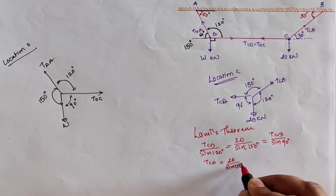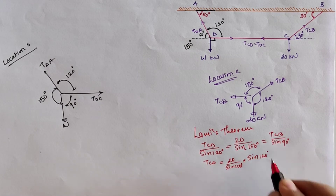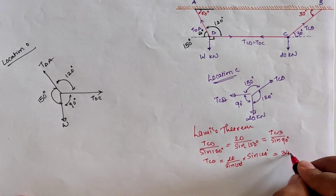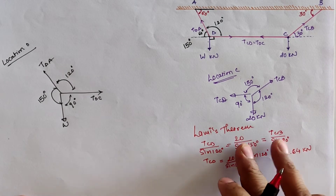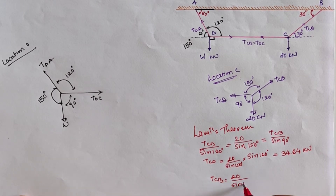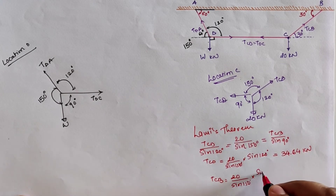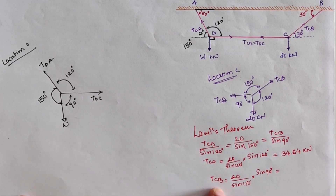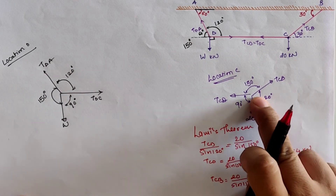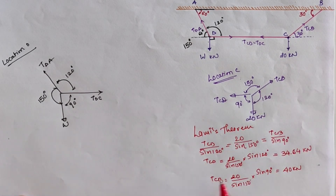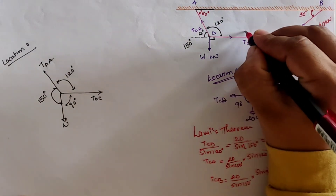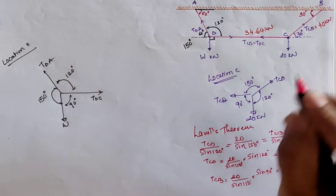Solving the first two parts: TCD equals 20 divided by sine 150, multiplied by sine 120. Hence the value of TCD is 34.64 kilonewton. Taking the second part: TCB equals 20 divided by sine 150, multiplied by sine 90. Solving this, TCB — tension in cord C to B — is 40 kilonewton. So from the free body diagram at location C, tension in cord CB equals 40 kilonewton, and tension in cord DC equals 34.64 kilonewton.